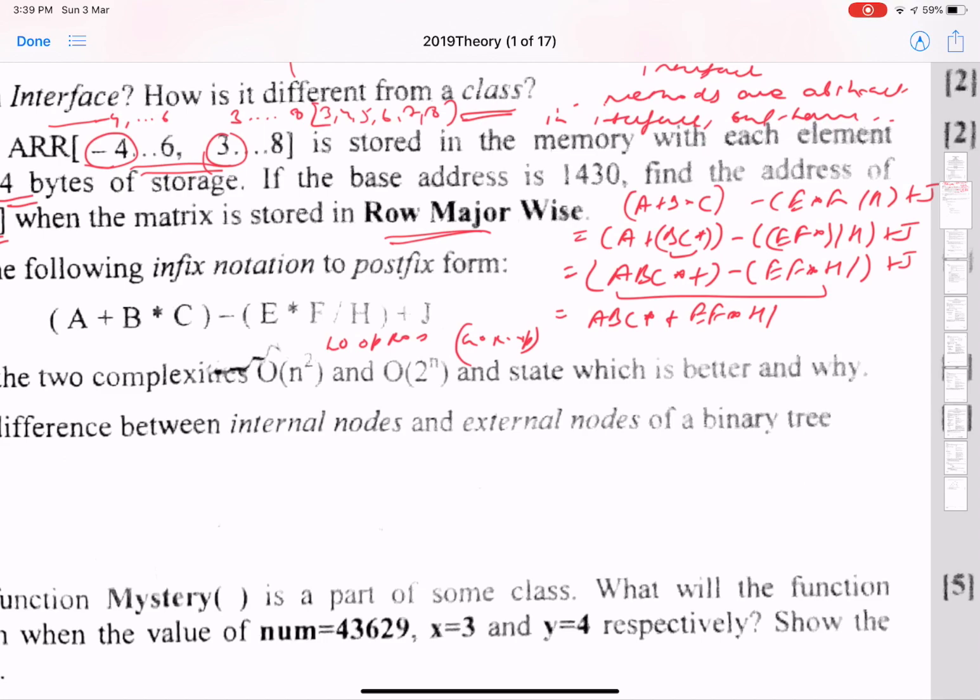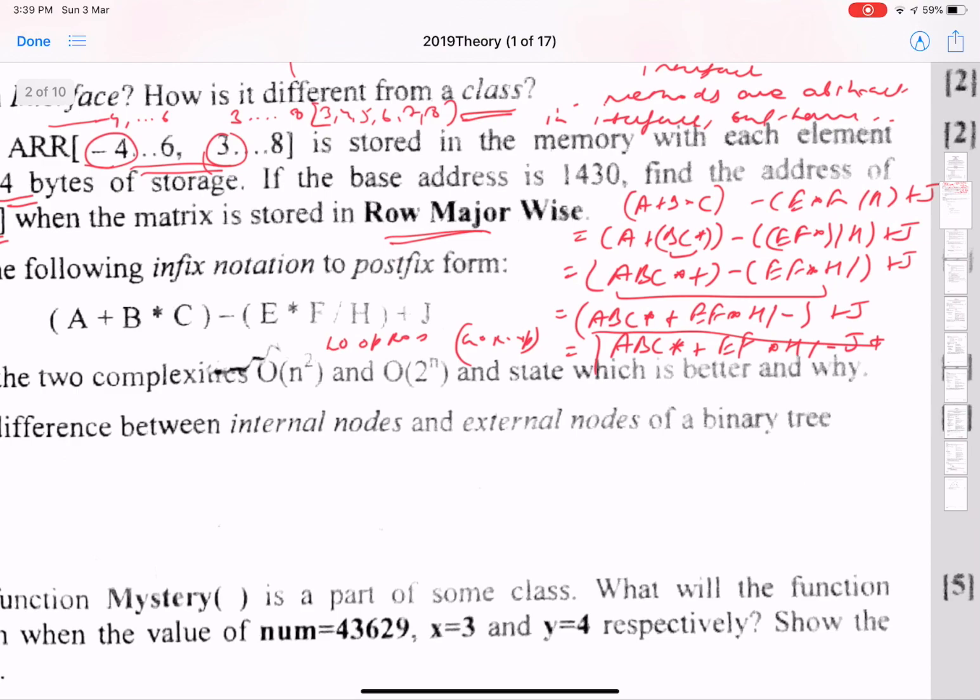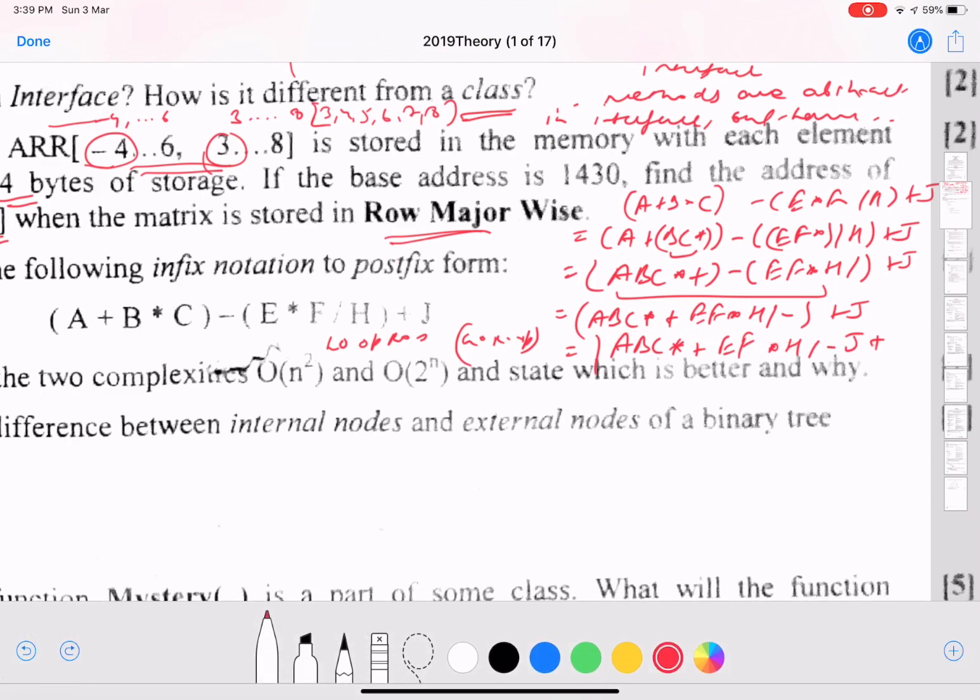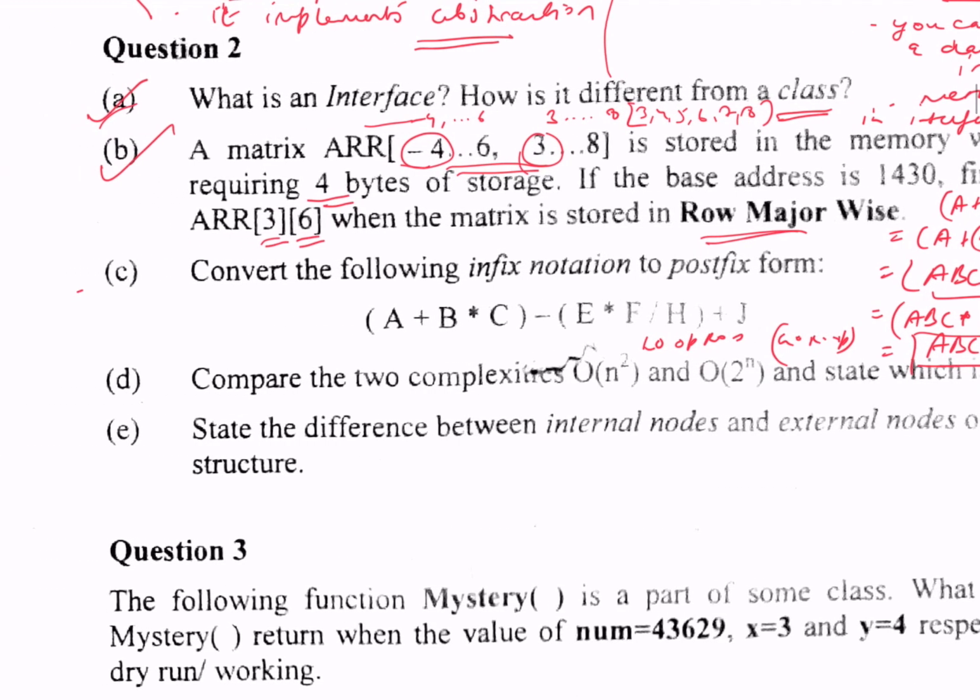Finally we have ABC*+EF*H/-J+, which is the answer. This is the answer, good. So part C is done.